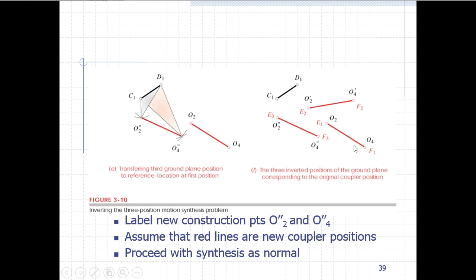In the finished construction, at line C1D1 we now have our original O2 and O4, plus O2 prime and O4 prime, plus O2 double-prime and O4 double-prime. We relabel these as E1F1, E2F2, and E3F3 respectively — these red lines become our new coupler positions. We then proceed with three-position synthesis as normal using these EF lines.